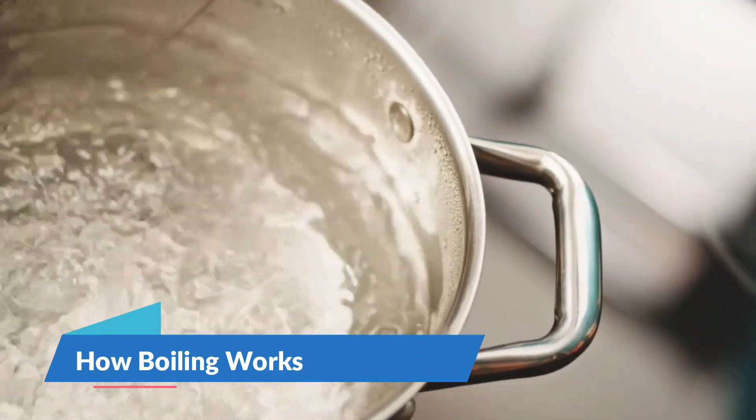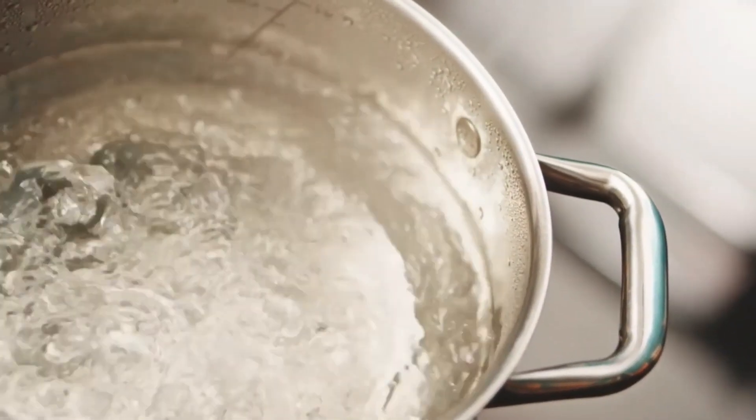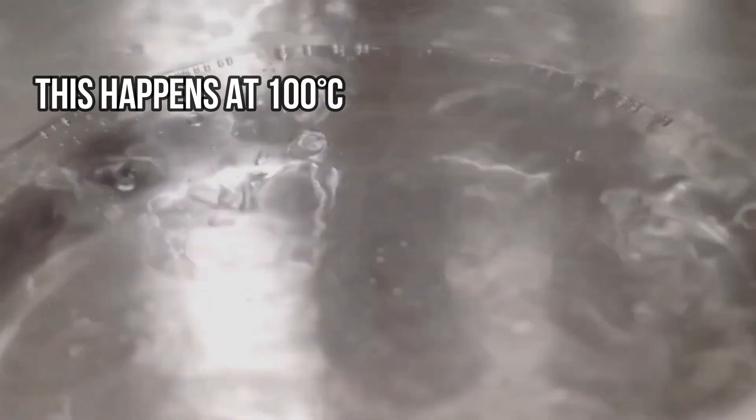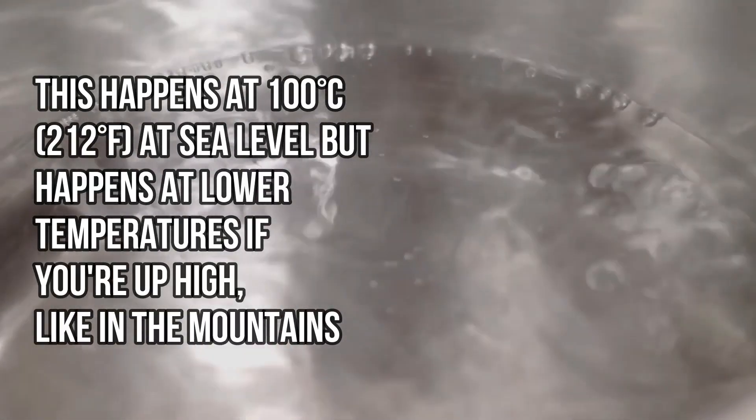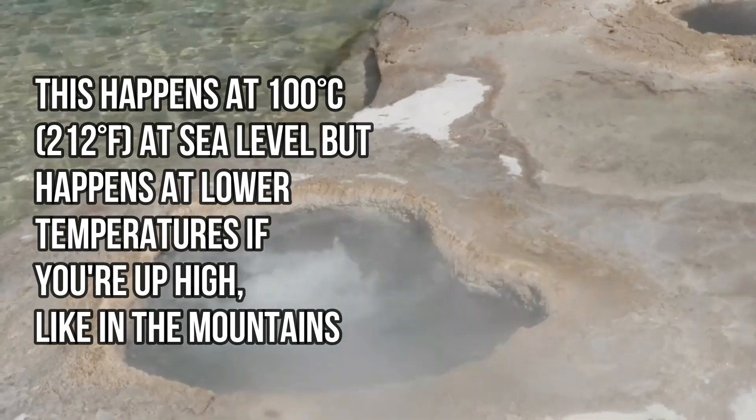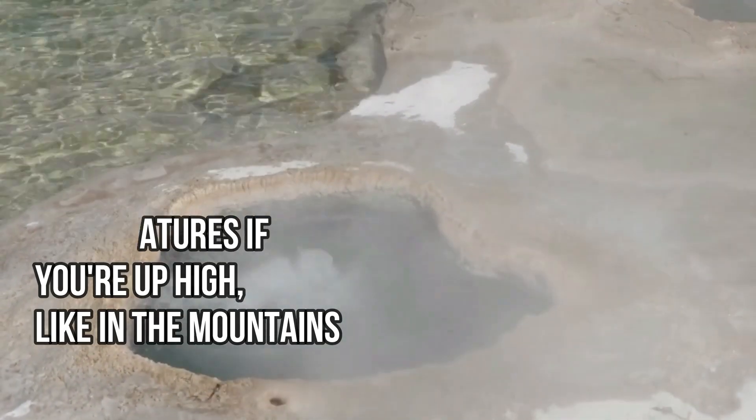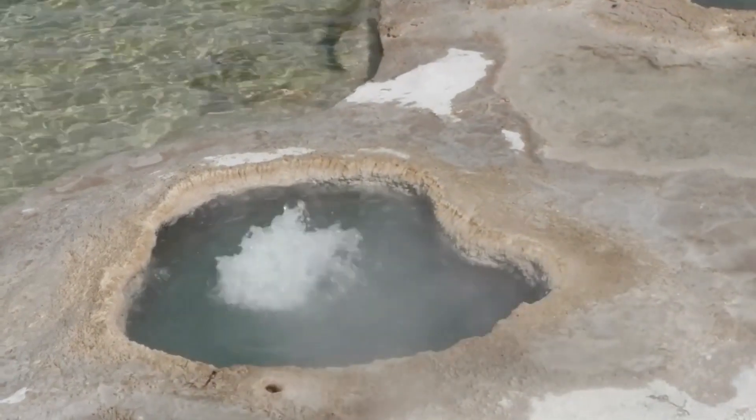How boiling works: When you boil water, you heat it up until it turns to steam. This happens at 100 degrees Celsius, 212 degrees Fahrenheit at sea level, but happens at lower temperatures if you're up high, like in the mountains. This is because there's less air pressure up there.